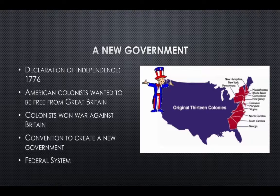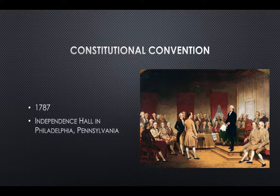At the convention, the representatives decided what kind of government they wanted for their new country. In the end, they decided on a federal system. At this Constitutional Convention in 1787, the Founding Fathers met at Independence Hall in Philadelphia, Pennsylvania.